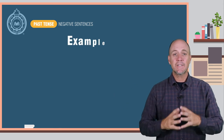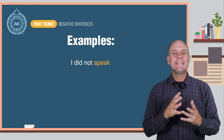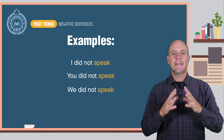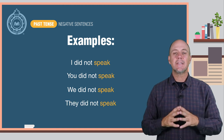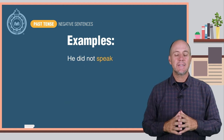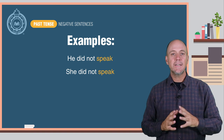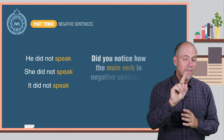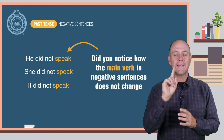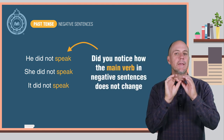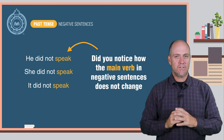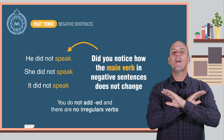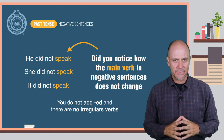Here are some examples: I did not speak. You did not speak. We did not speak. They did not speak. He did not speak. She did not speak. It did not speak. Did you notice how the main verb in the negative sentences does not change? You do not add '-ed' and there are no irregular verbs.